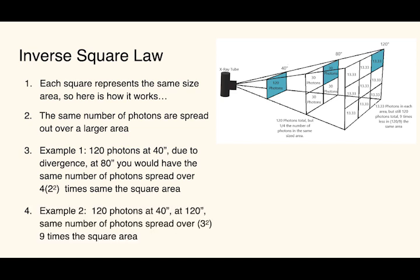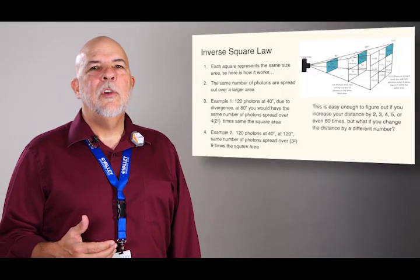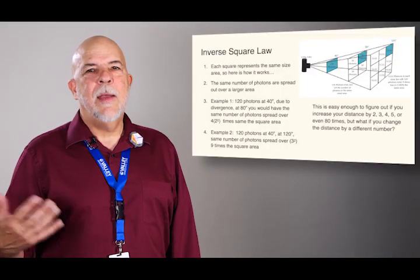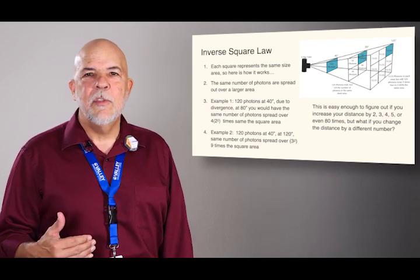Second example, if we have 120 photons at 40 inches, if we move back to 120 inches or three times the distance, then we have nine times larger area. So in that same square area, we would have nine times less radiation because it has spread out. So the intensity change is pretty easy to figure out. If we're just going by 2, 3, 4, 5, or even 80 times, you just square your distance and that's how much less intense the beam is.